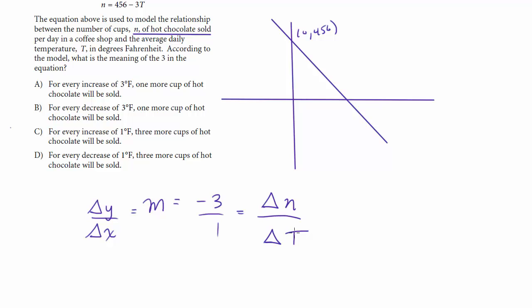So let's really break this down. What is this saying? It is saying that for every change in n of 3, you have a change in t of 1. In other words, for every change in t of 1, you're going to have a change in n of 3. So this is a ratio of the change in the number of cups of hot chocolate sold and the change in the number of degrees it is outside.